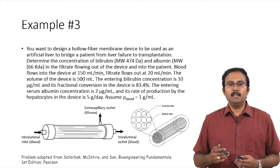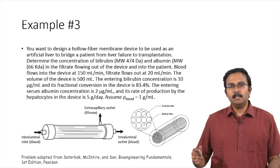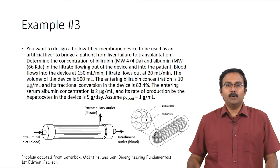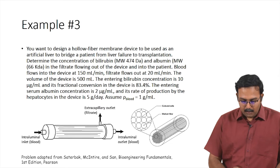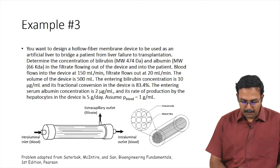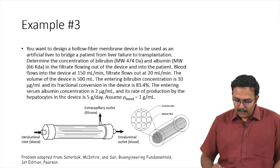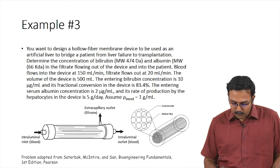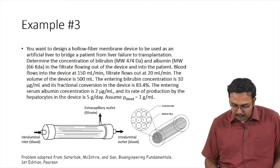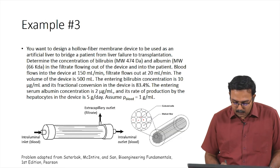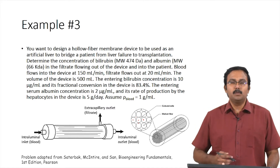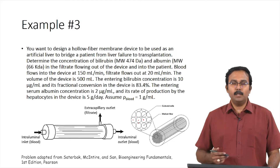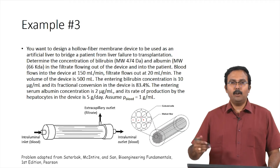You can assume that the density of blood is 1 gram per ml. This is an artificial liver device. You have multiple tubes present inside the hollow membrane — these are the tubes where blood flows. Inside these tubes blood is flowing, and there are cultured cells in the gaps between them. These gaps are filled with cultured cells, which are the hepatocytes — nothing but liver cells. These liver cells can process the blood to ensure it becomes free of contaminants and toxins.